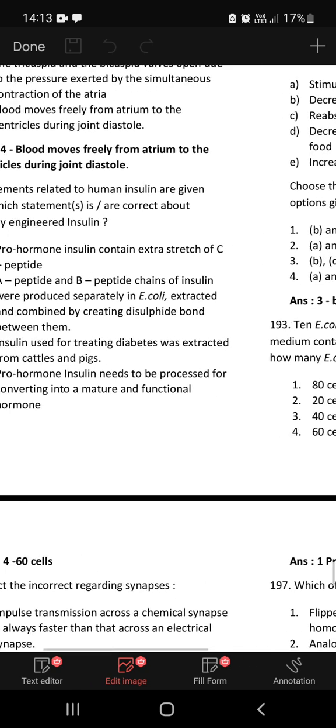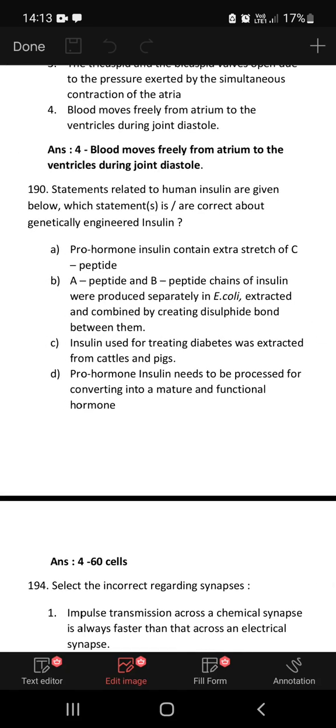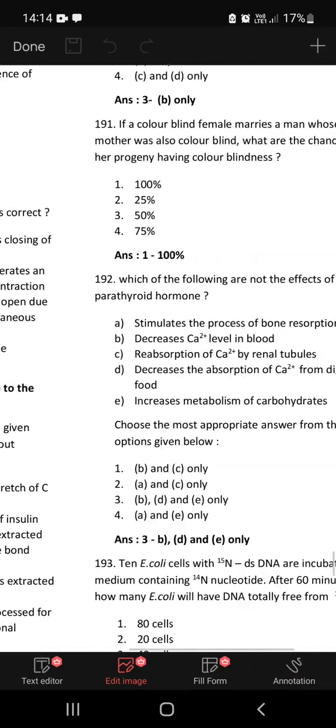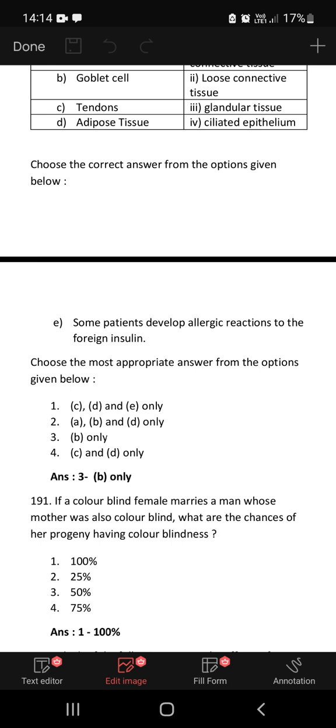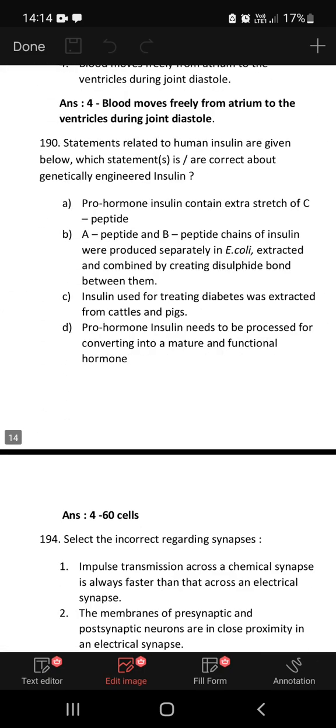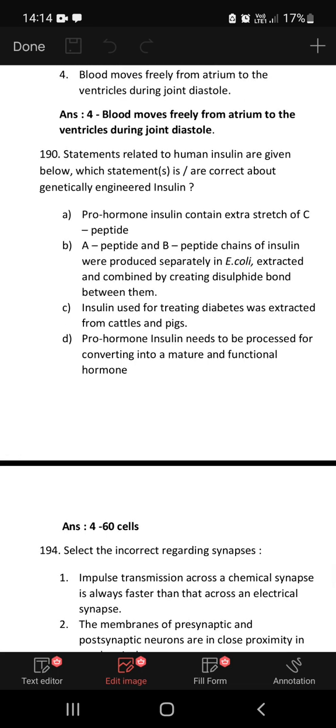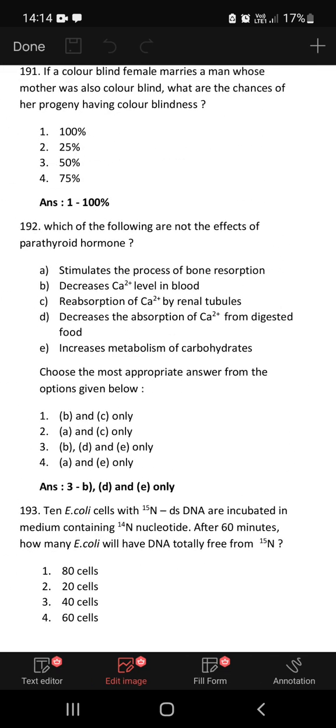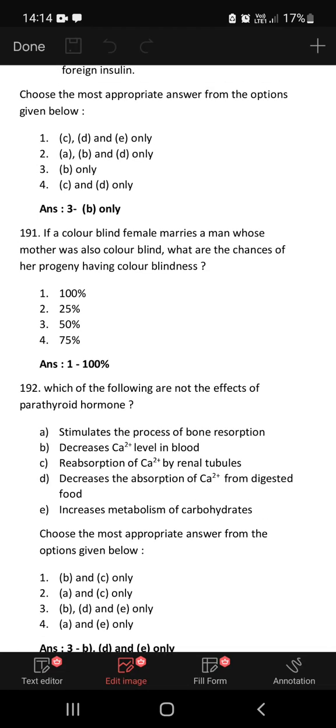Statements related to human insulin are given below. Which statement is or are correct about genetically engineered insulin? Pro-hormone insulin contains extra stretch of C peptide. A peptide and B peptide chains of insulin were produced separately in E. coli, extracted and combined by creating disulfide bond between them. Insulin used for treating diabetes was extracted from cattles and pigs. Pro-hormone insulin needs to be processed for converting into mature and functional hormone. The only answer for this is B only. A peptide and B peptide chains of insulin they produced separately in E. coli, extracted and combined during this genetic engineering process. Eli Lilly company, American company, you might remember about it.